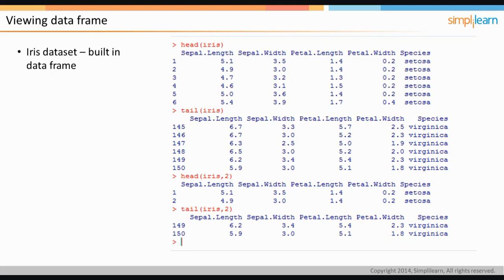The IRIS dataset is loaded by default in R. To view the dataset, just type the dataset name on the prompt. To view the top few records, use the head function. The syntax is head of dataset name, comma number of rows. The number of rows is an optional argument, and the default number of rows is 6.